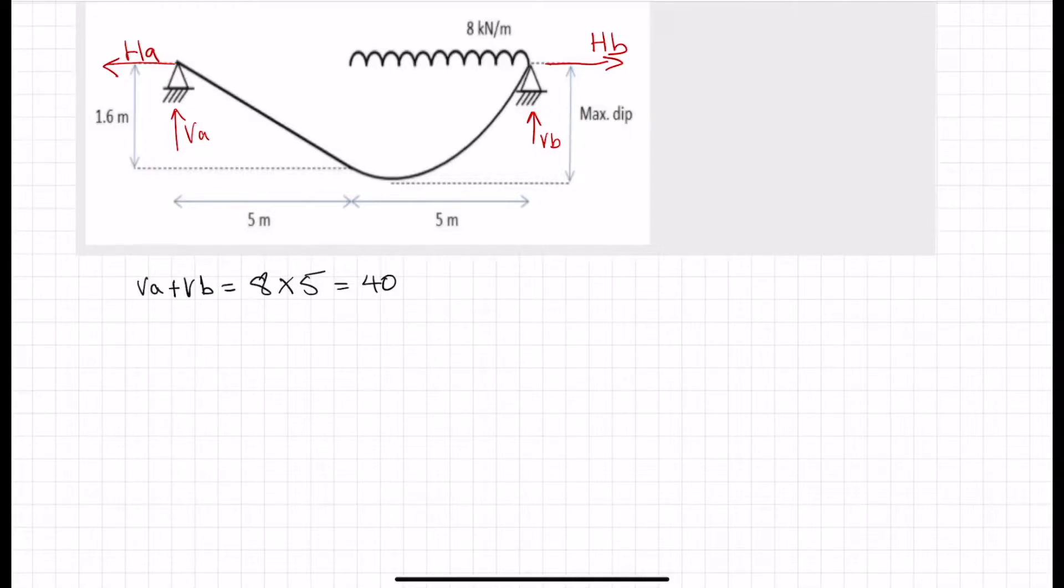We don't know how it's distributed yet, so let's take moments about A. That basically eliminates both of the horizontals and the vertical at A. So we have 8 kilonewtons per meter, summing all the clockwise moments first, which is the UDL. 8 kilonewtons per meter times by 5 meters times by, well, it's being applied at this point here, which is going to be 2.5 plus another 5. So that is 7.5 meters. And that is equal to VB times 10 meters, which is this lever arm here.